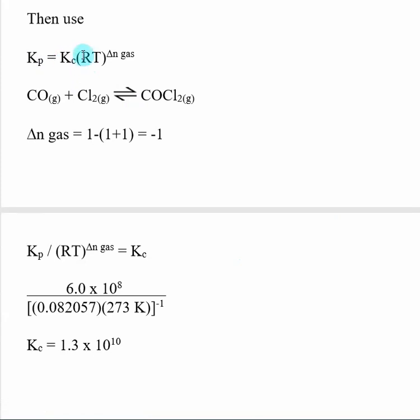So all we have left is we need R. That's our gas law constant. We already know that. T, I told you that this equilibrium expression was true at 0 degrees C, and we need to convert to Kelvin. And then we also need to find delta n gas.